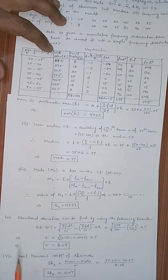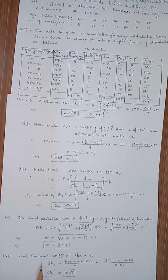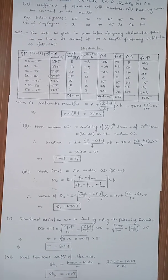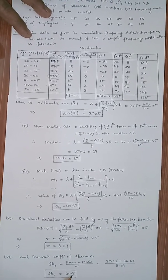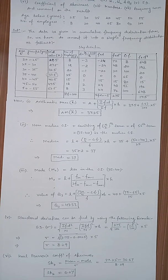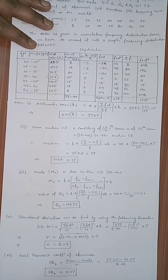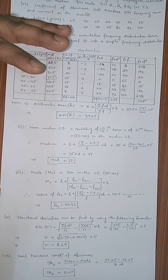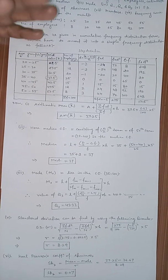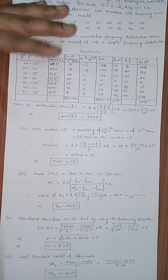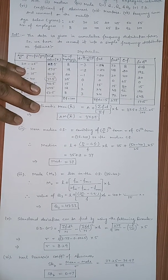Karl Pearson's coefficient of skewness formula is: Skewness = (Mean − Mode) / σ. Putting in the values, the coefficient = 0.07. The value lies between −3 and +3. Since it is positive, the frequency curve is positively skewed, meaning the tail on the right side is longer than the left-hand tail.